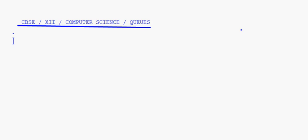Let's take a deletion from a linked queue and write the coding for that. In our last session we looked at the concept of deletion from a linked queue, the algorithm, and how a node from the linked queue will be deleted. Today we'll take up the coding for that.